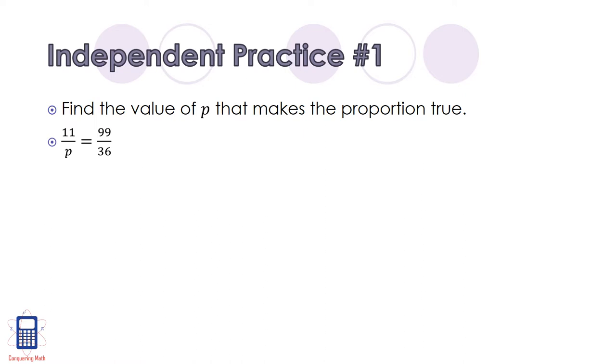Now it's time for you to try one on your own. Find the value of p that makes the proportion true. 11 over p equals 99 over 36. Pause the video, give it a shot, and unpause the video when you're ready. So rewrite the equation, and then cross multiply, and we find that 11 times 36 equals 99p. We simplify 11 times 36 into 396, and then we divide by 99 on both sides, and we find that p equals 4.